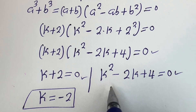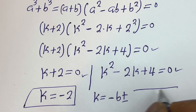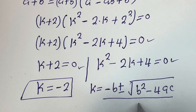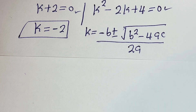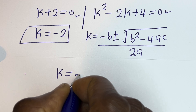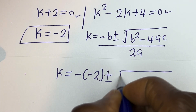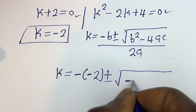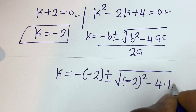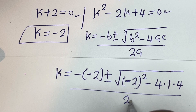From the second sub-case, this is a quadratic equation solved using the quadratic formula: k equals minus b plus or minus square root of b squared minus 4ac, all over 2a. Here a equals 1, b equals minus 2, and c equals 4.